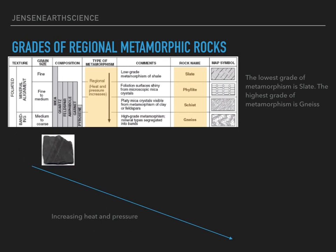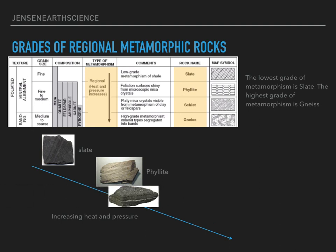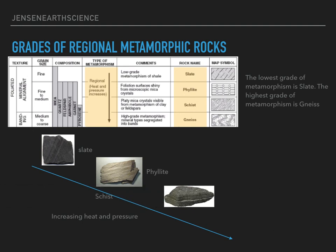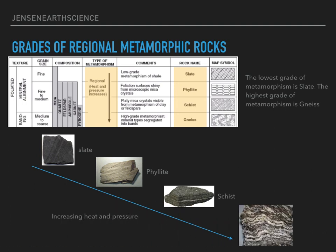So to begin, the first metamorphic rock is slate — it has gone through the least heat and pressure. When I add heat and pressure to slate, I will then get phyllite. When I add heat and pressure to phyllite, I will get schist. When I add even more heat and pressure to schist, I will then have my metamorphic rock known as gneiss.